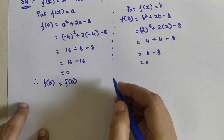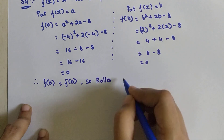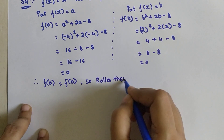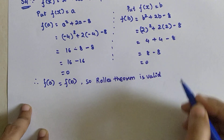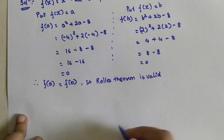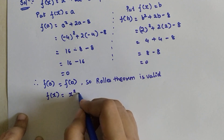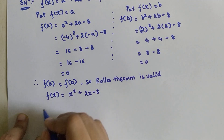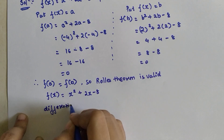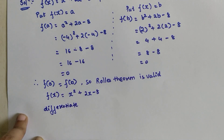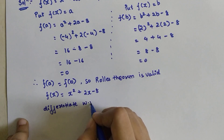Therefore, f(a) = f(b) = 0, so Rolle's Theorem is valid. Now we find f'(x) by differentiating f(x) = x² + 2x − 8 with respect to x, because in order to find c we need to set f'(c) = 0.